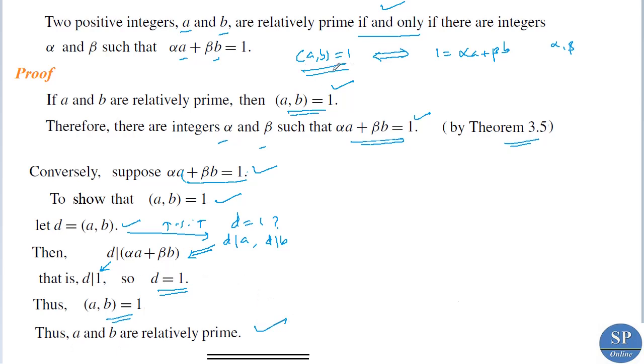So we have: a and b are relatively prime if and only if 1 can be expressed as a linear combination of a and b.